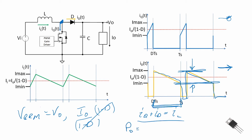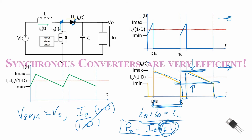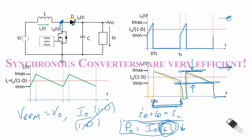The conduction loss through the diode equals the average diode current, I_out, times the forward voltage drop V_F. To minimize this loss, we often use a Schottky diode, which has a forward voltage drop on the order of 0.5 V or less. Alternatively, the diode can be replaced with a high-side MOSFET switch — this is called a synchronous boost converter, which further reduces losses but is not covered in this video.